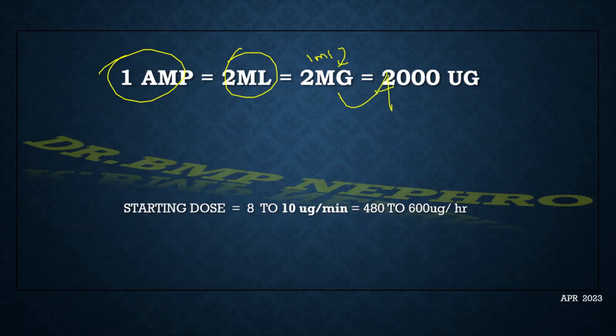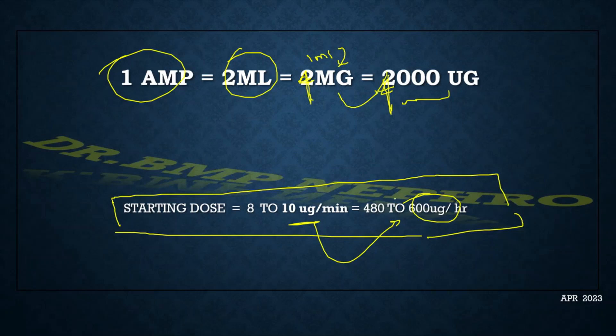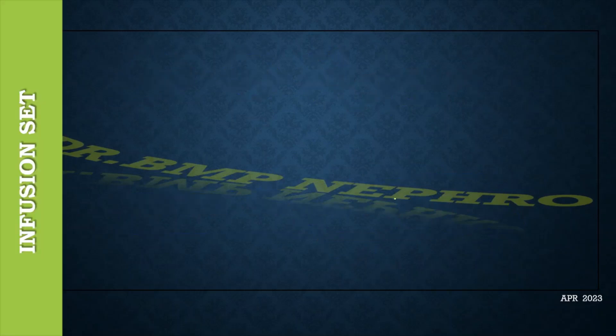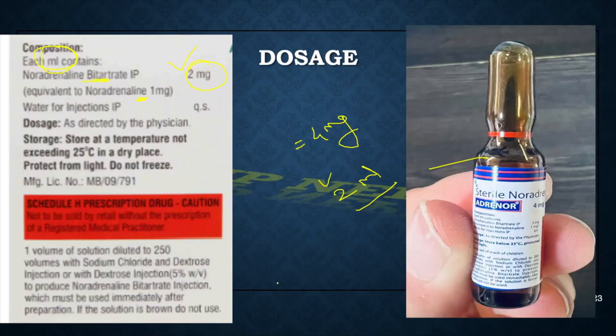Total is 4mg or 4000 mcg. The starting dose of noradrenaline is approximately 10 mcg per minute or we have to start at a dose of 600 mcg per hour. How to make the infusion set: In most ICUs infusion set will be available where 50ml syringe we use to make the infusion set. For infusion we can use normal saline or dextrose solution.